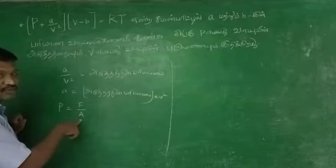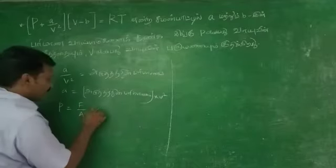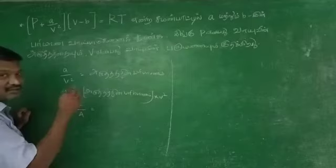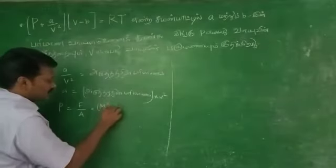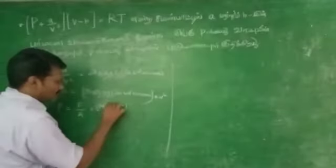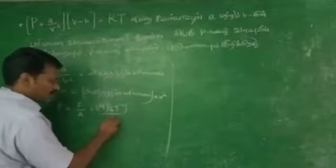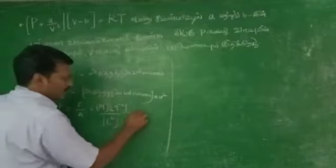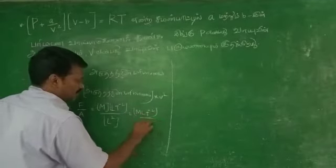If you want to add the mass syntax, you can add the mass syntax. You can add L T power minus 2. If you want to add L², you can add L² by L².